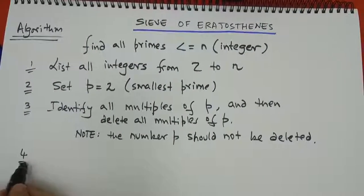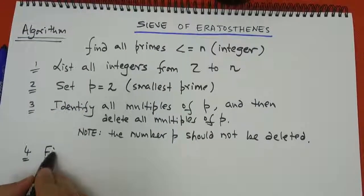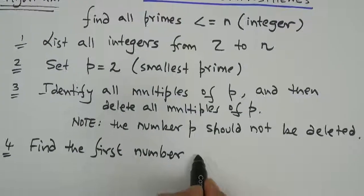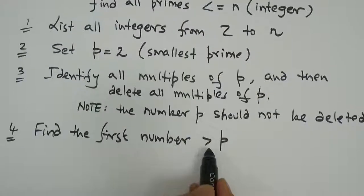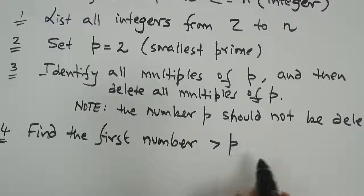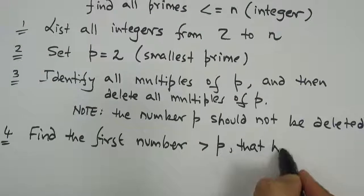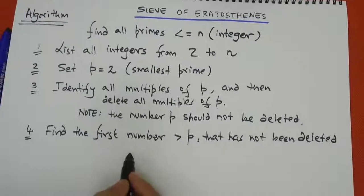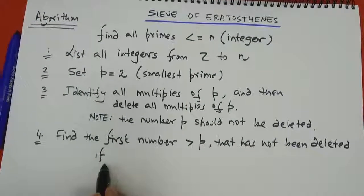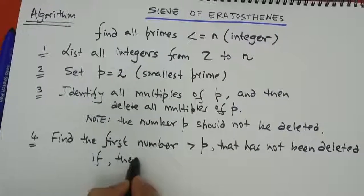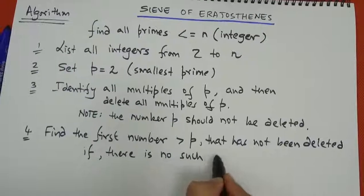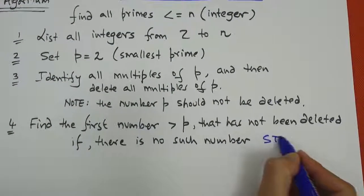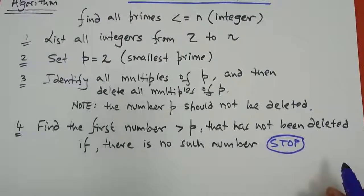Now we get to the fourth step: find the first number that is greater than p that has not been deleted. If there is no such number, then the algorithm actually goes ahead and stops. So if that is the case then the algorithm stops or terminates.